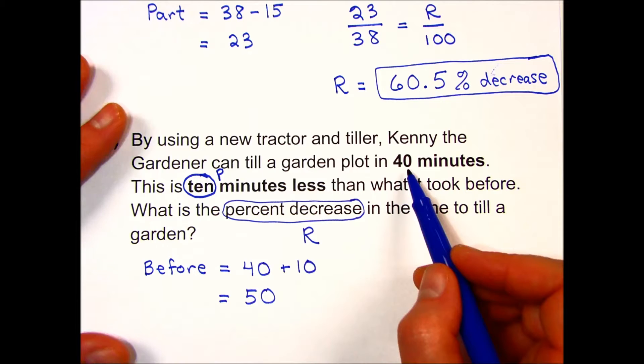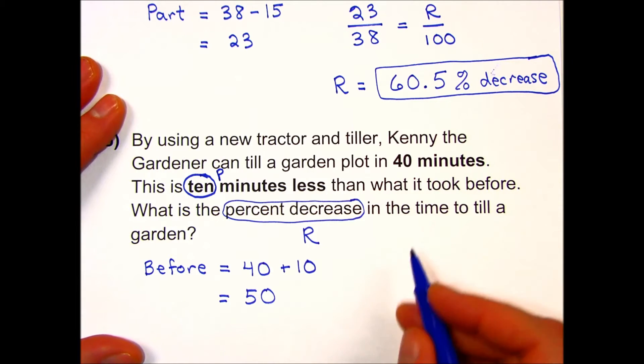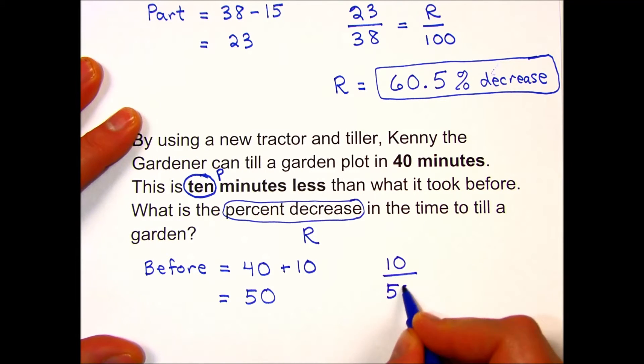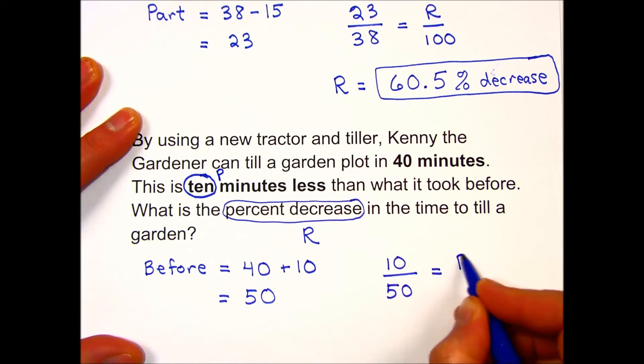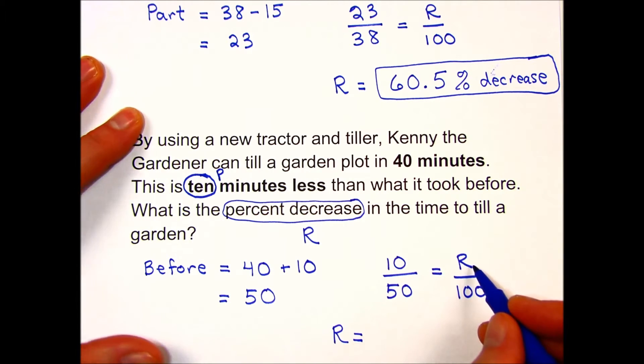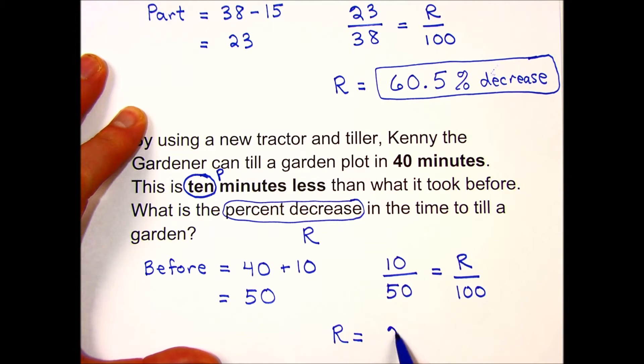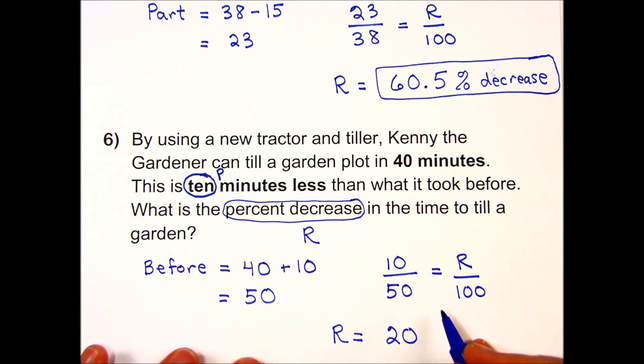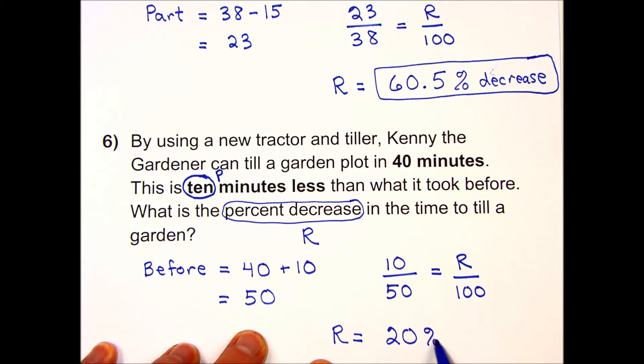Let's place these into our formula: part over base equals rate over 100. Grabbing a calculator and cross multiplying, I have 10 times 100 divided by 50, and that gives me 20. Include a percent symbol, and it's a decrease.